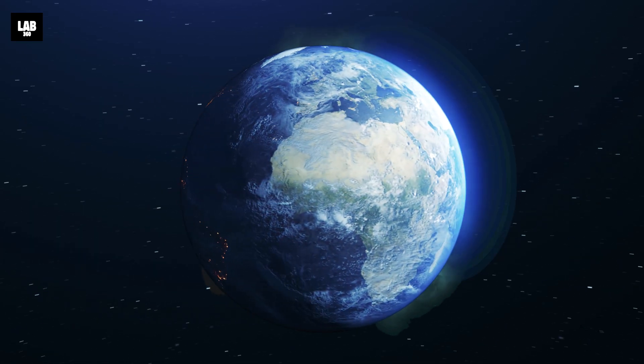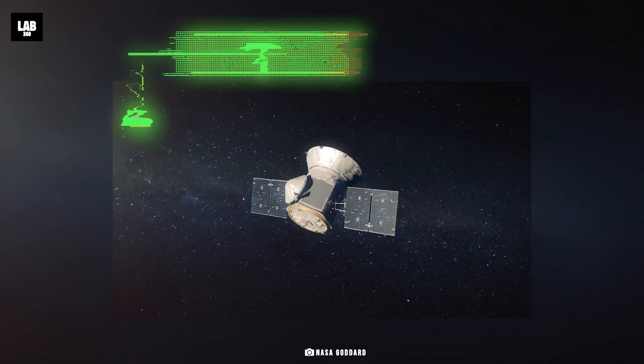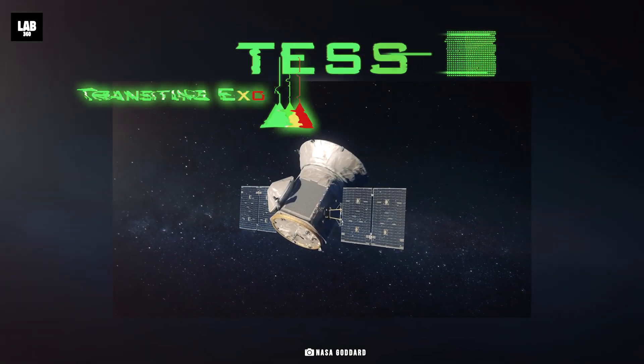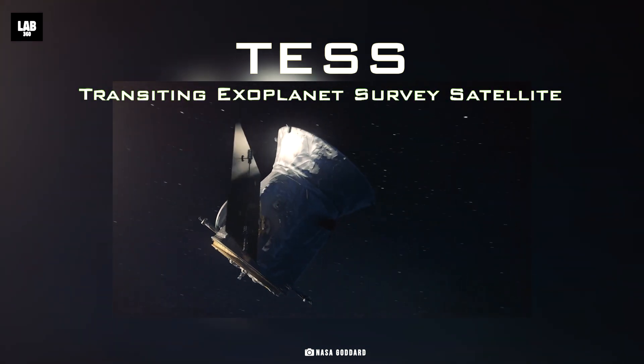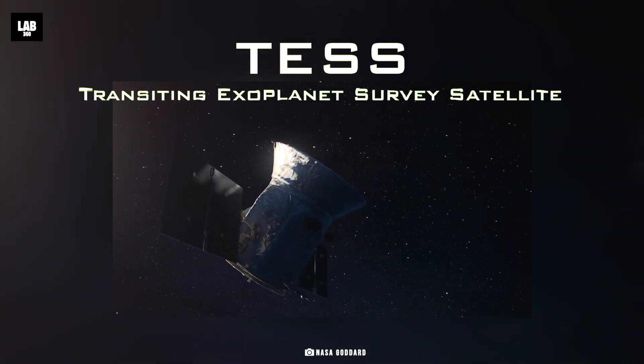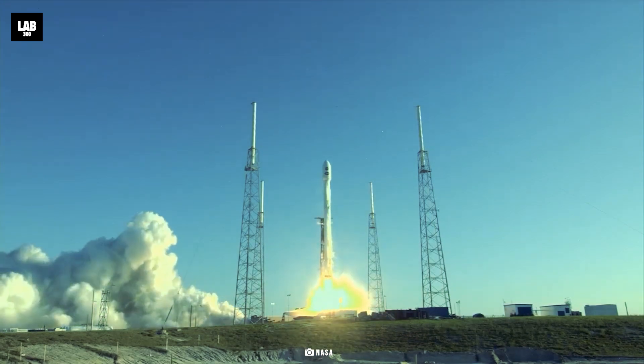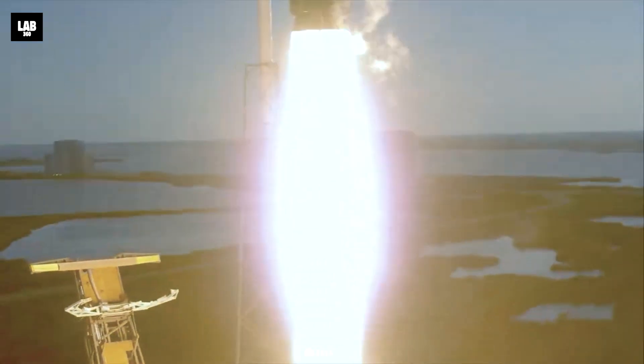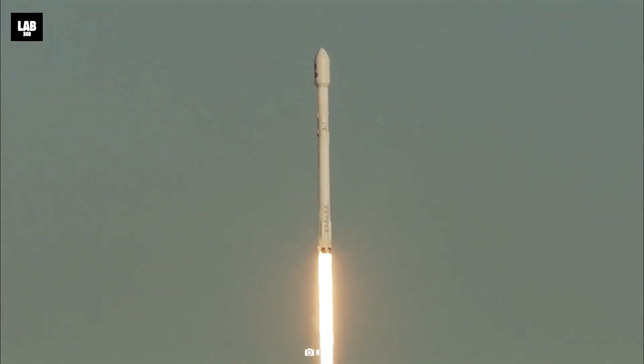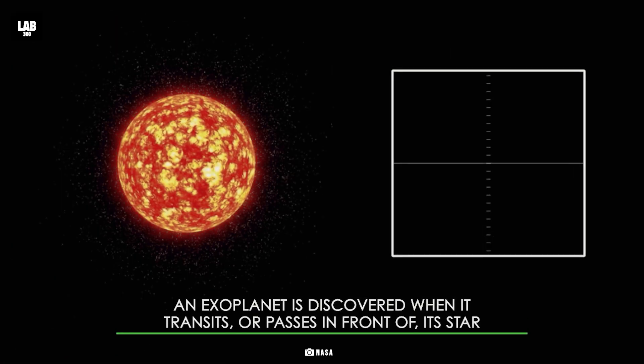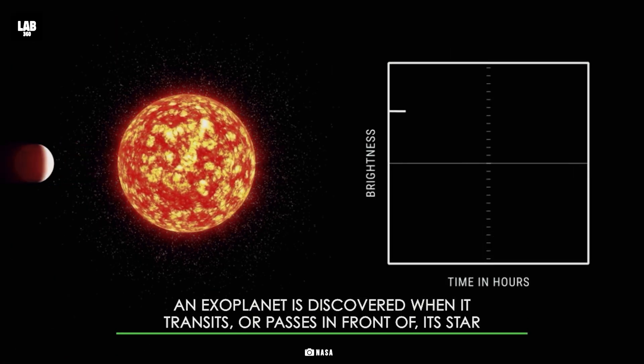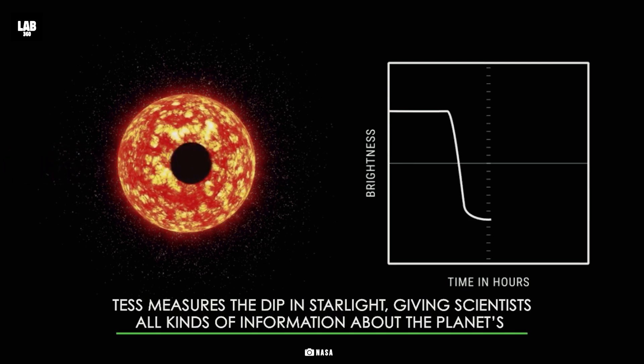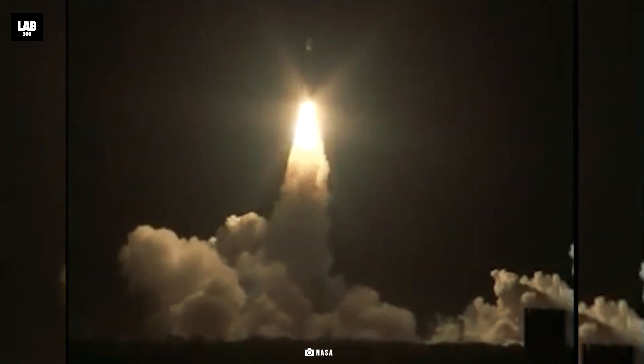For this purpose, TESS, also known as the Transiting Exoplanet Survey Satellite, was launched on April 18th, 2018. It is a space telescope for NASA's Explorer program designed to search for exoplanets. TESS uses the transit method in an area 400 times larger than that covered by the Kepler mission.